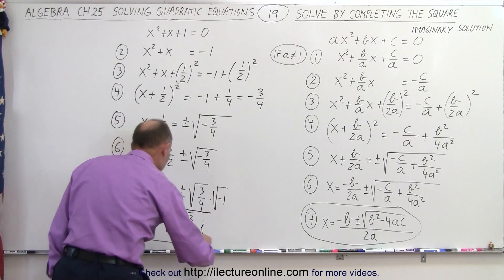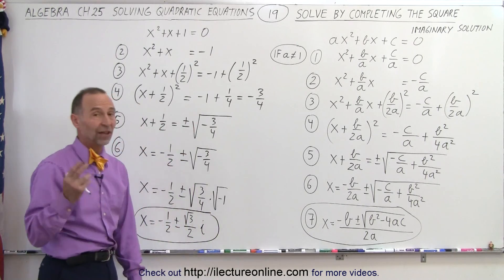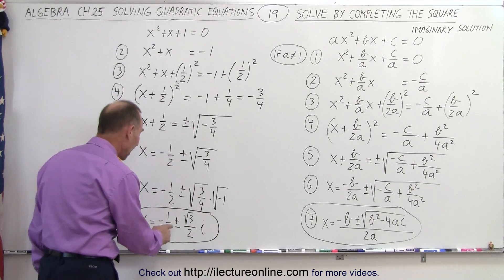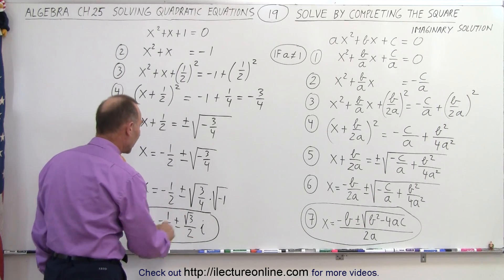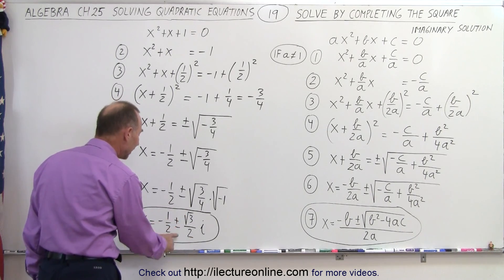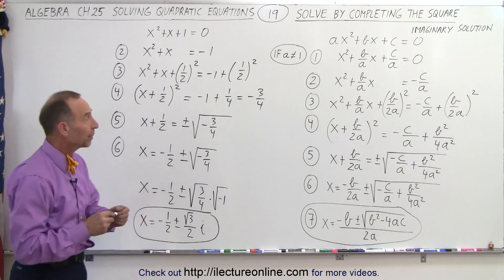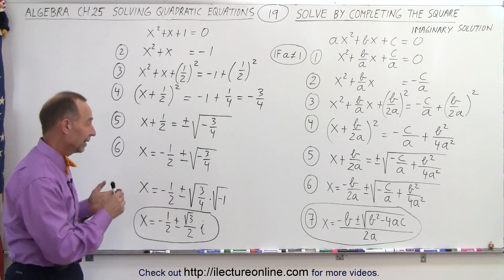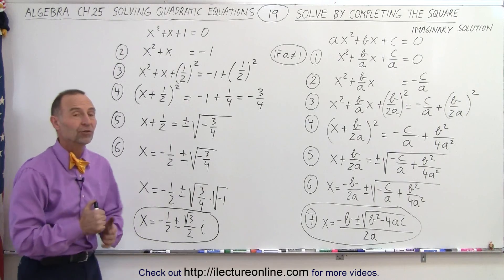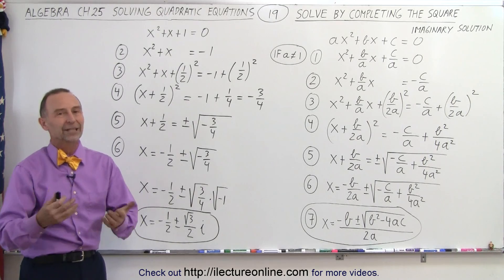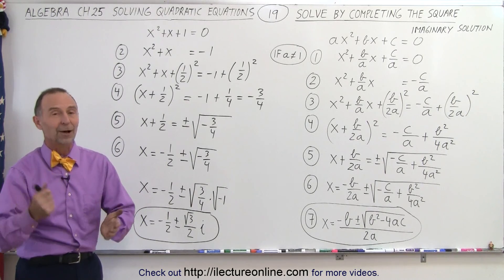And this, then, would be the imaginary solutions. There's actually two of them: minus 1 half plus the square root of 3 over 2 i and minus 1 half minus the square root of 3 over 2 i. So these are the two solutions for that particular quadratic equation. They're imaginary, and we found them by using the completing the square method. And that is how it's done.